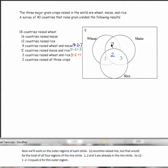Now we'll work on the outer regions of each circle. 12 countries raised rice, but that would be the total of all four regions of the rice circle. 1, 2, and 3 are already in the rice circle. So 12 total minus 1 minus 2 minus 3 equals 6 for this outer region of the rice circle.